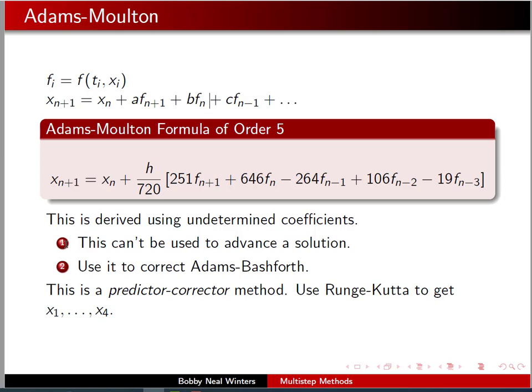that we can use Adams-Bashforth in order to get a set of points and then use Adams-Moulton to correct it. So, this is called a predictor-corrector method.